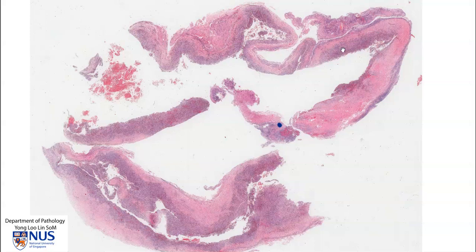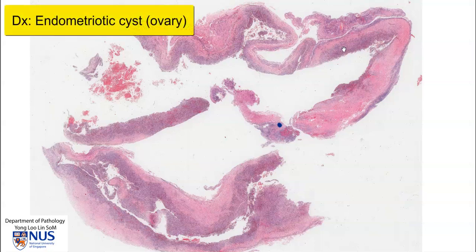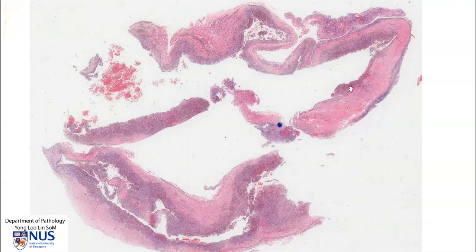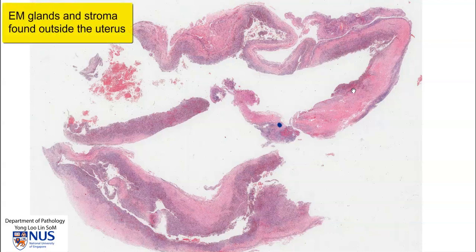Hello, this is a virtual microscopy slide from an endometriotic cyst of the ovary. An endometriotic cyst is a cystic area which is a focus of endometriosis. This means that the endometrial glands and stroma are found within the ovary.